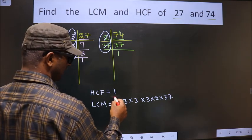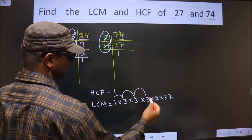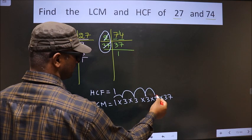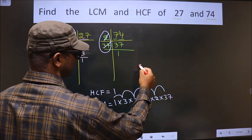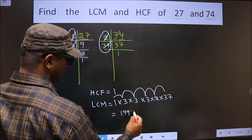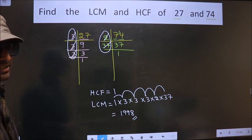That is 1 times 3 equals 3. 3 times 3 equals 9. 9 times 3 equals 27. 27 times 2 equals 54. 54 times 37 equals 1998. So this is our LCM and this is our HCF.